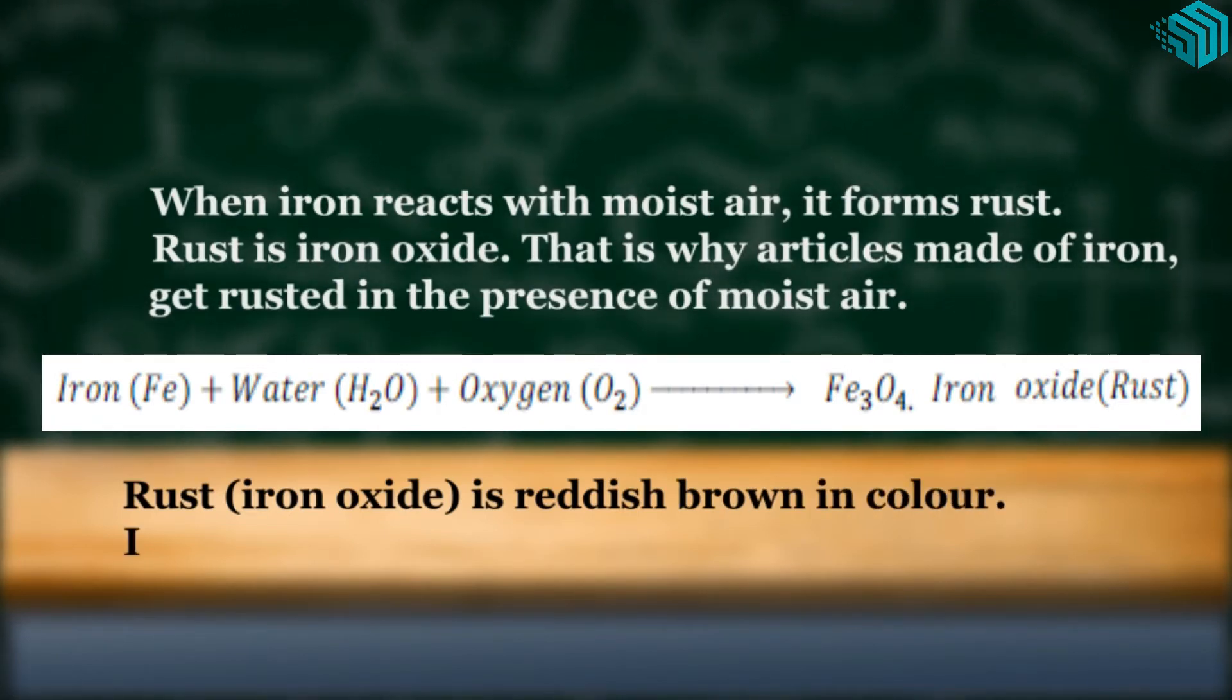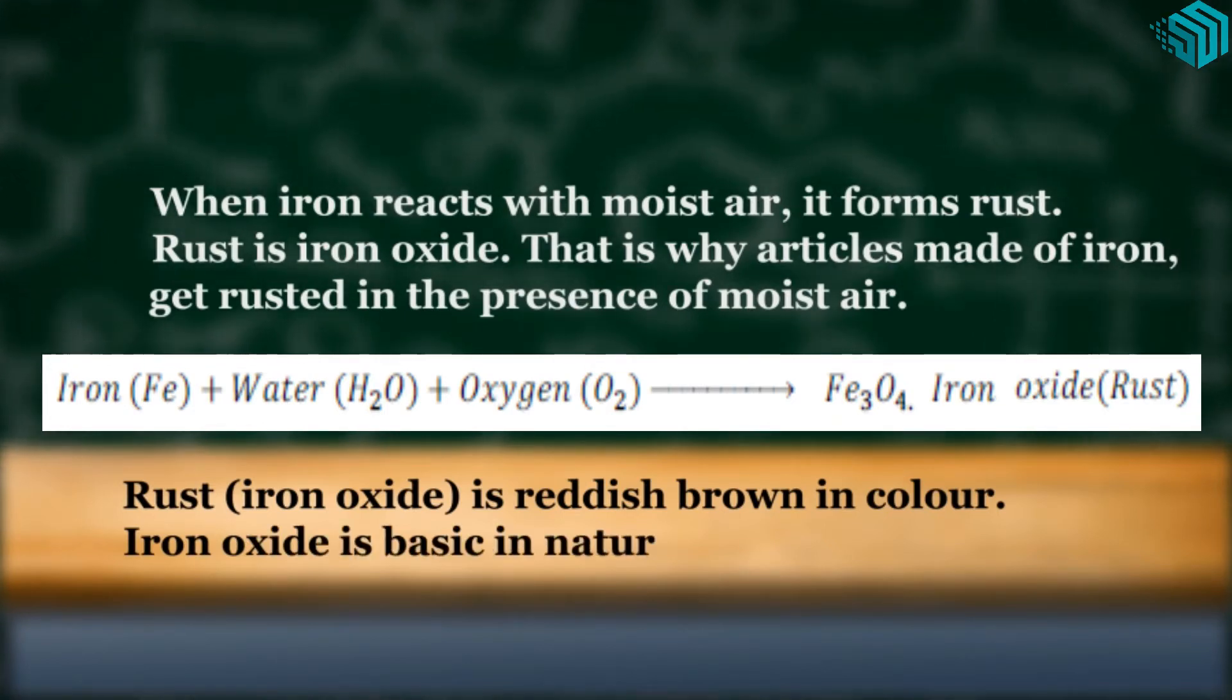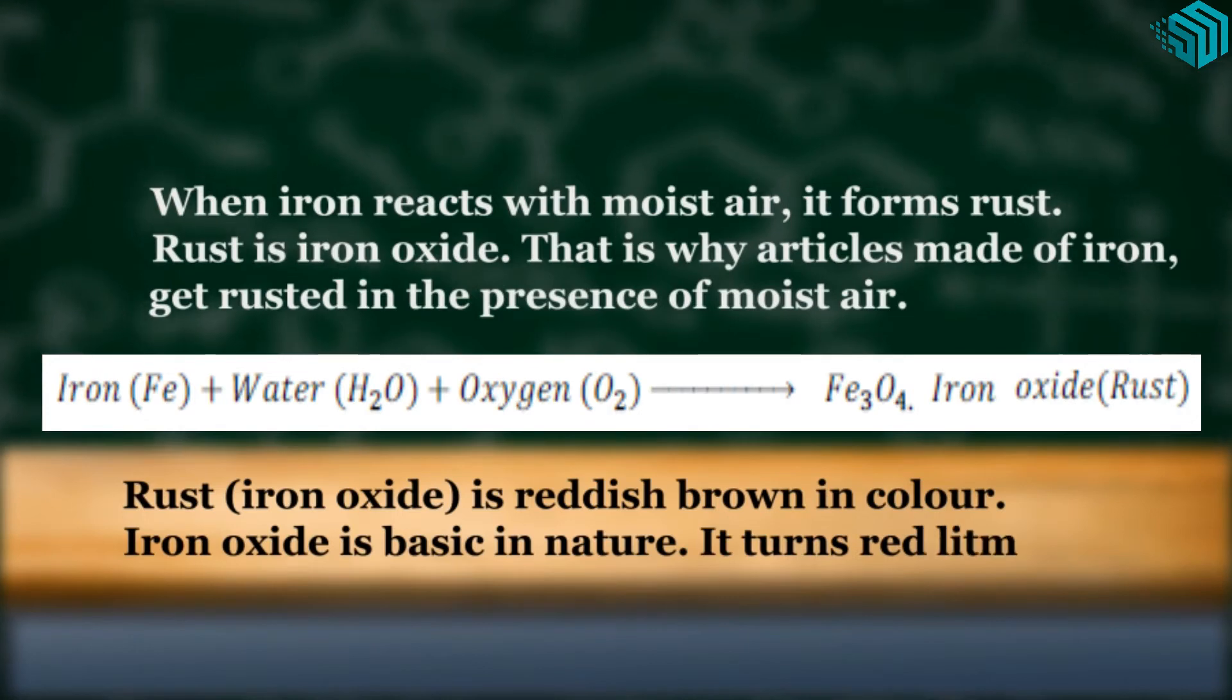Rust, which is iron oxide, is reddish brown in color. Iron oxide is basic in nature. It turns red litmus blue.